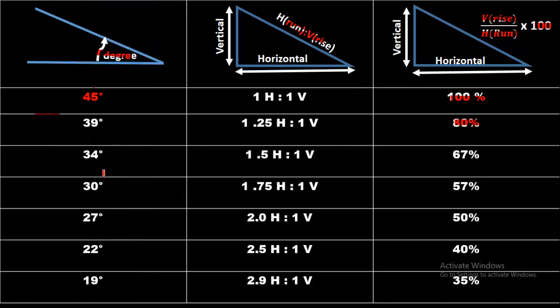Vertical distance is 1 and horizontal distance is 1.25 multiplied by 100. We will get 80%. Similarly, other degrees are 34 degrees and it is equivalent in ratio to 1.5 horizontal and 1 vertical and it is equal to 67% of the slope.